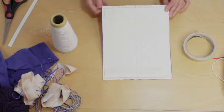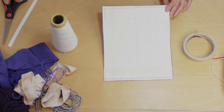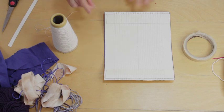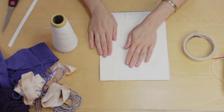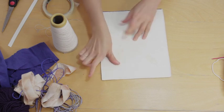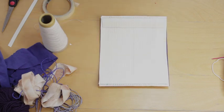So once you have run out of slots, you need to cut your warp thread, leave a tail on it, turn your weaving card over, and we're going to tape it to the back. So now we're ready to get started with our weaving.